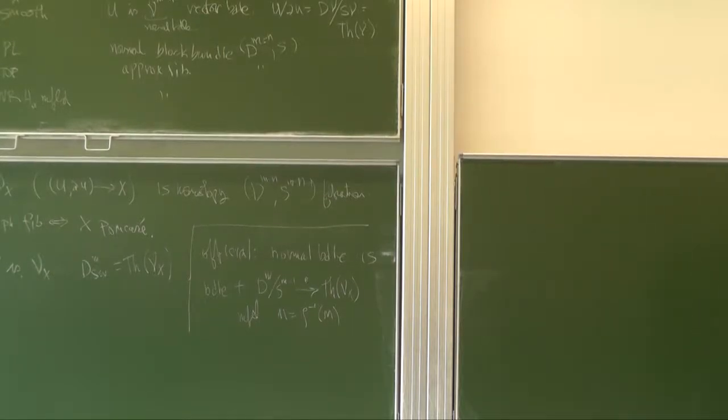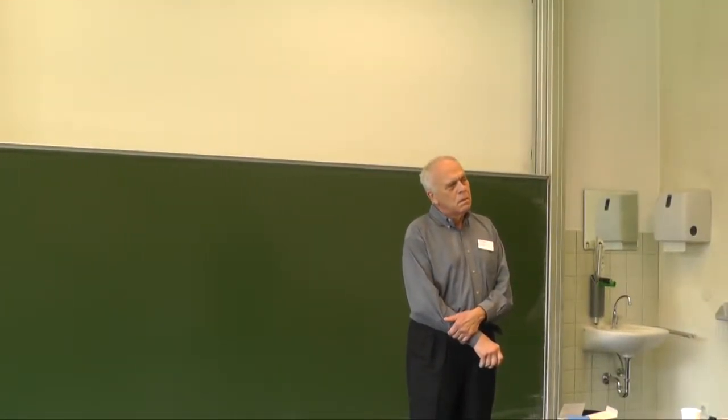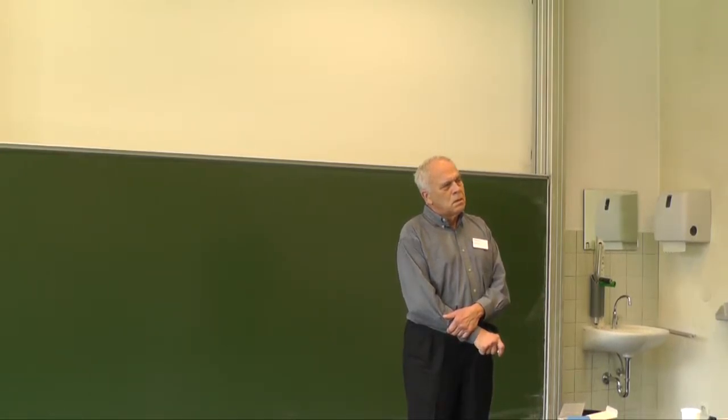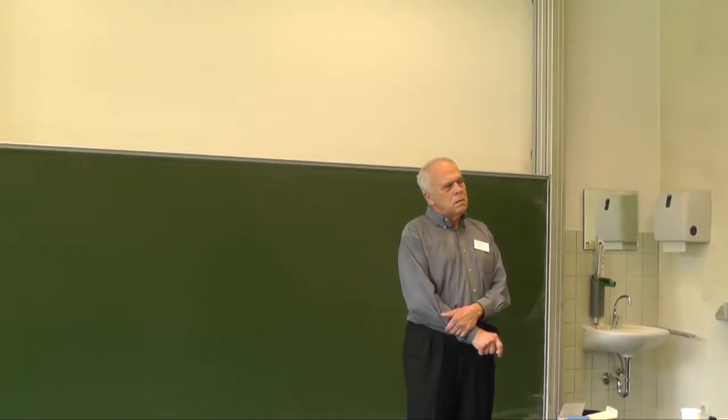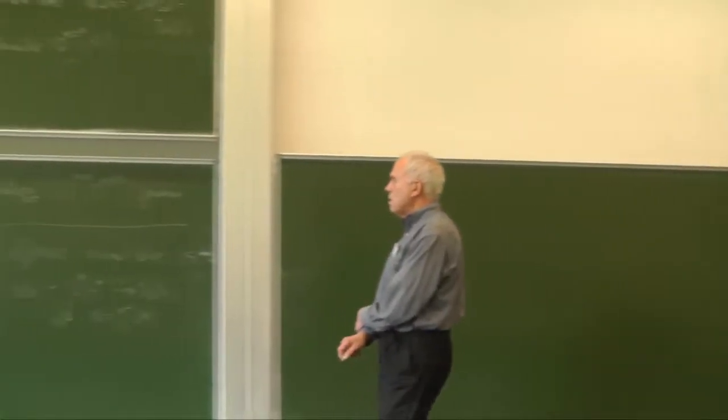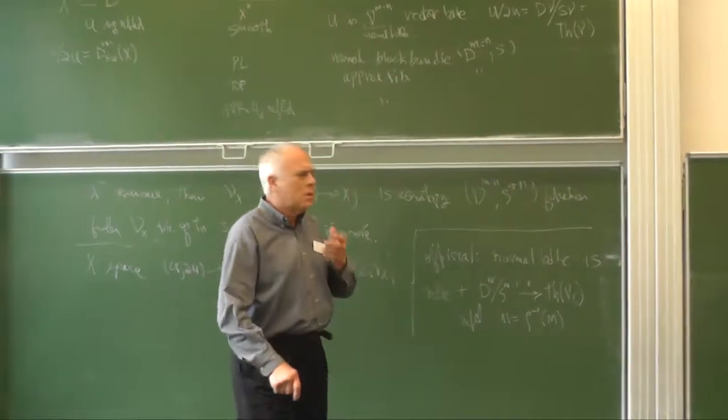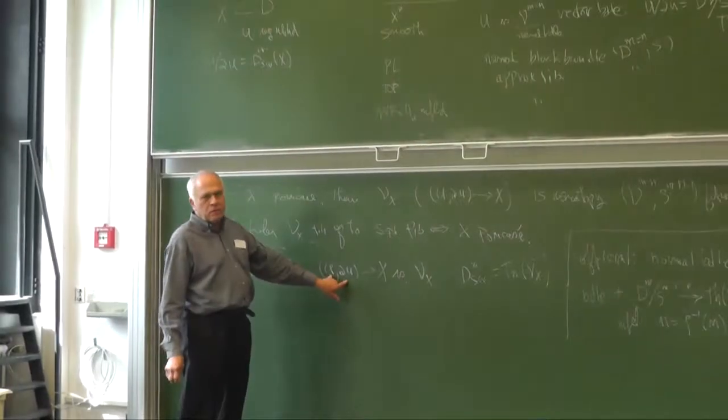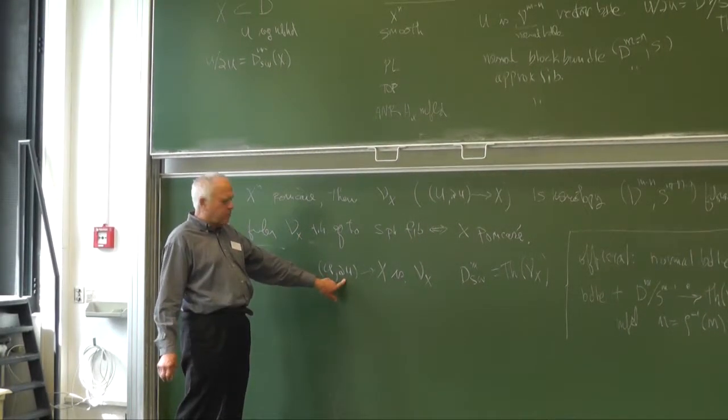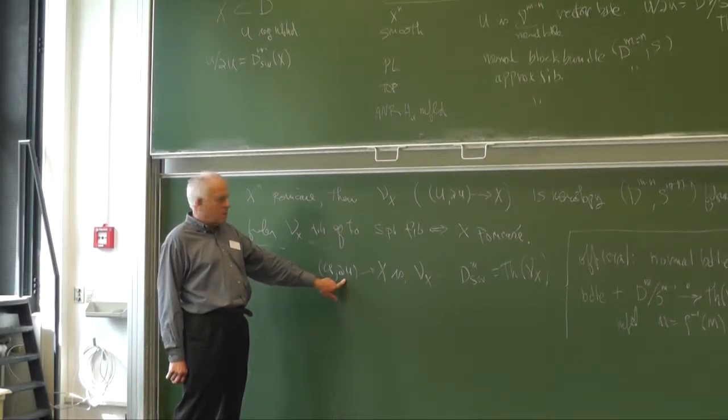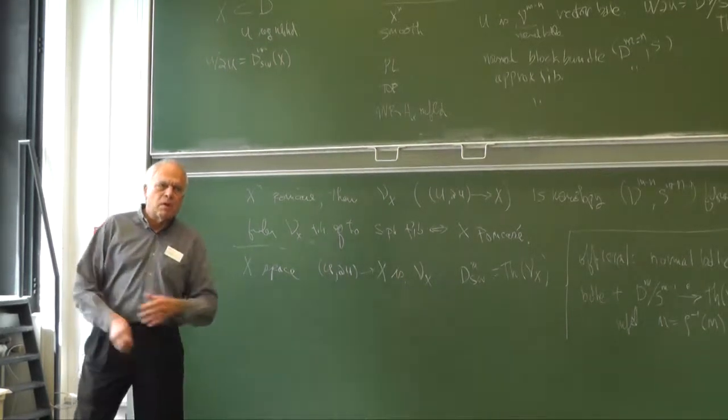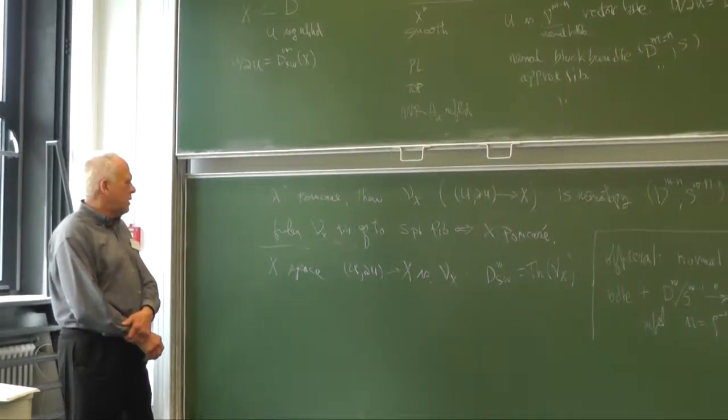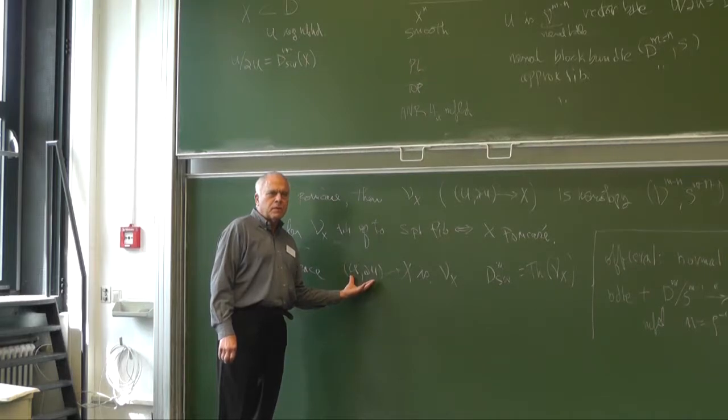In the case of a Poincaré complex, the normal bundle is just a homotopy spherical fibration. Usually the Thom space would be the Thom space of the associated fibration. In the case of an arbitrary space, you just take the actual space. If you make this thing into a fibration and then divide out, you get the same homotopy type as just taking the quotient here. The fibration part is a red herring when you're thinking about homotopy type—it's better to think about this as a geometric model.